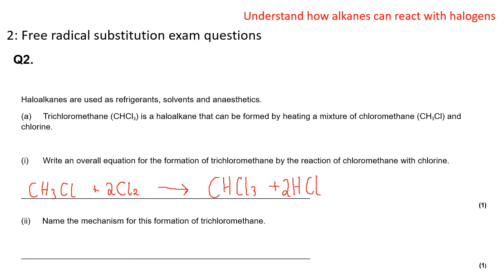The second part of the question asks you to name the mechanism for this formation of trichloromethane. You should be able to work that out — we need to put in all of it though. The answer is free radical substitution.